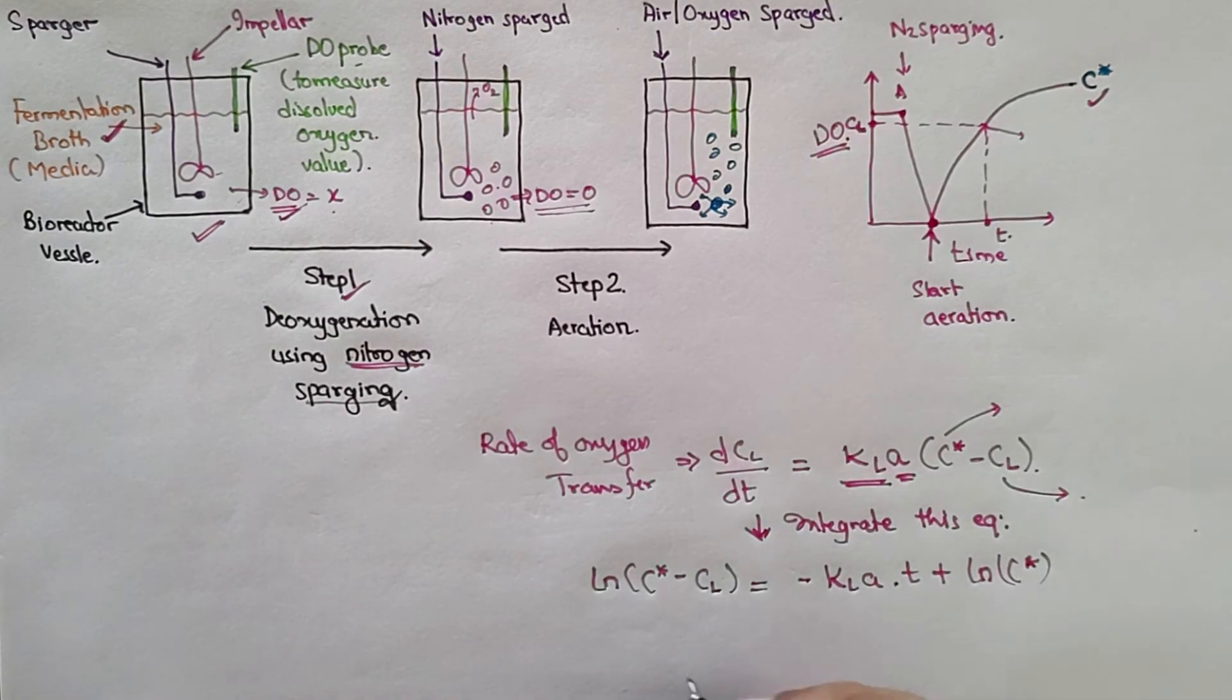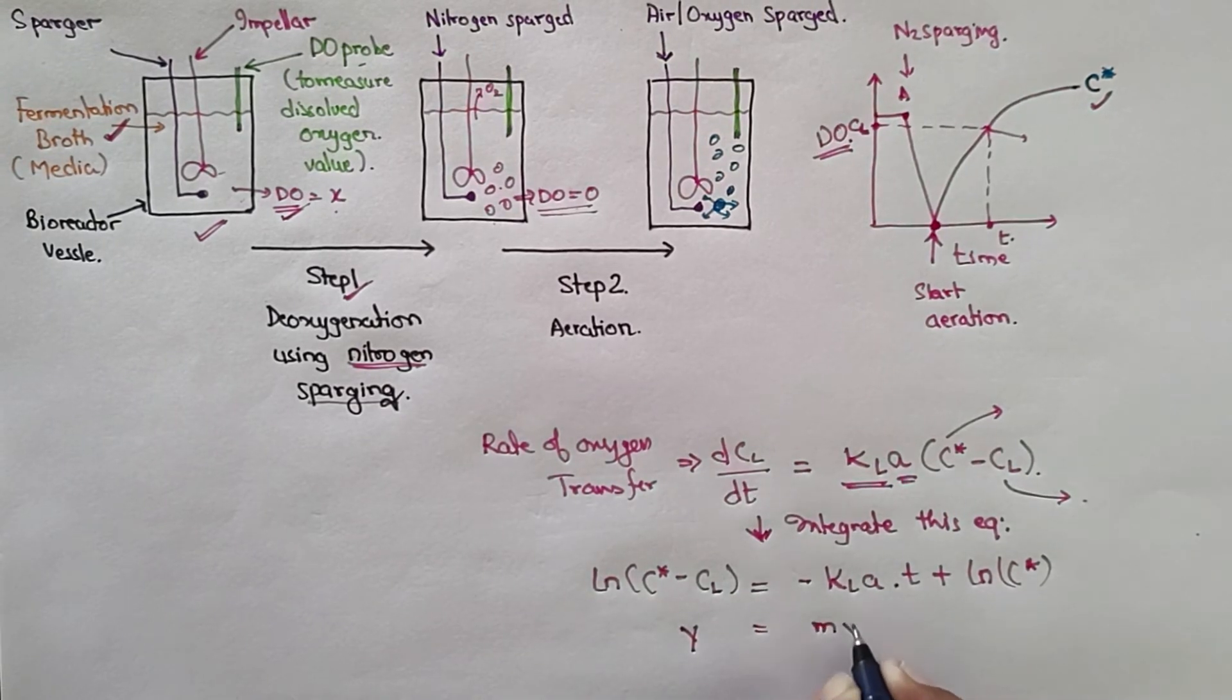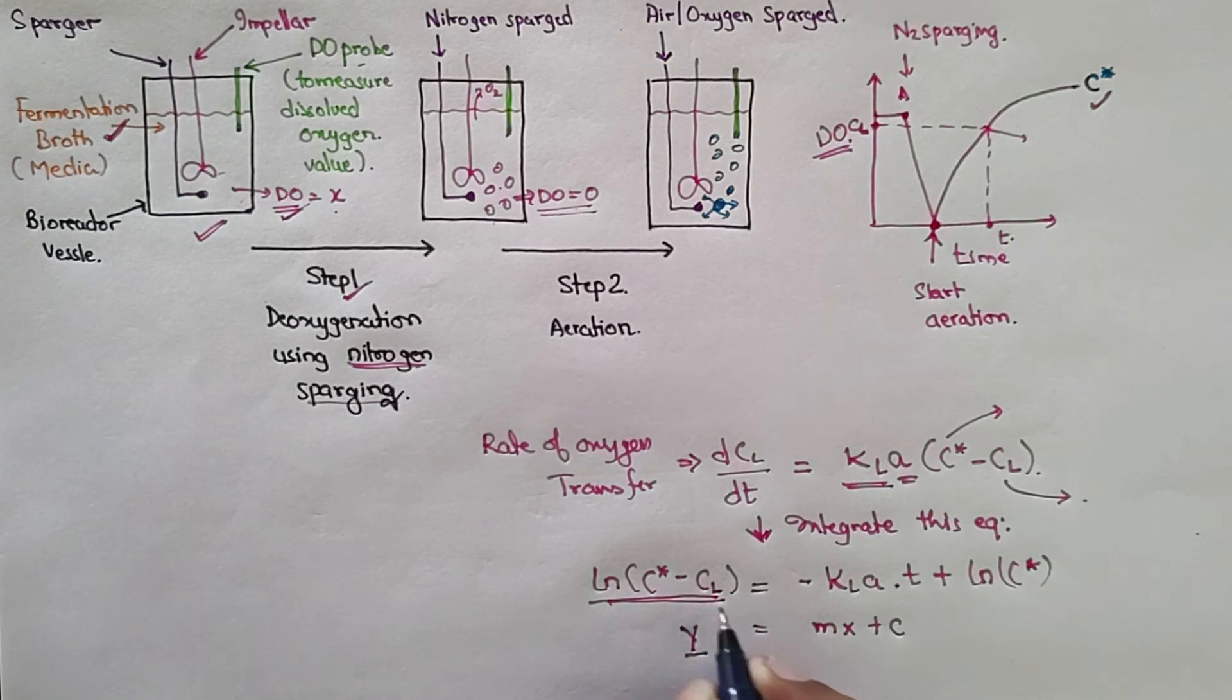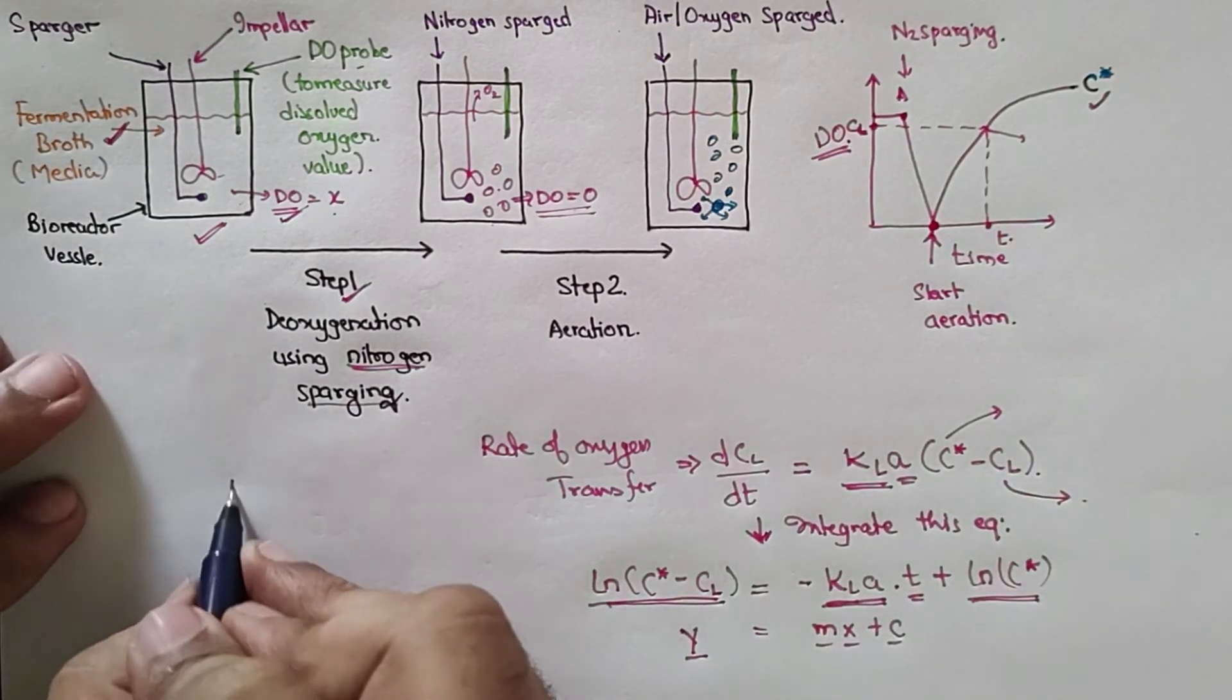So if you can correlate, it is equal to y = mx + c kind of equation. So what is your y? This is your y: ln(C* - CL), and m is -KLA. X is your time, and c is your ln(C*). So if we plot a graph between